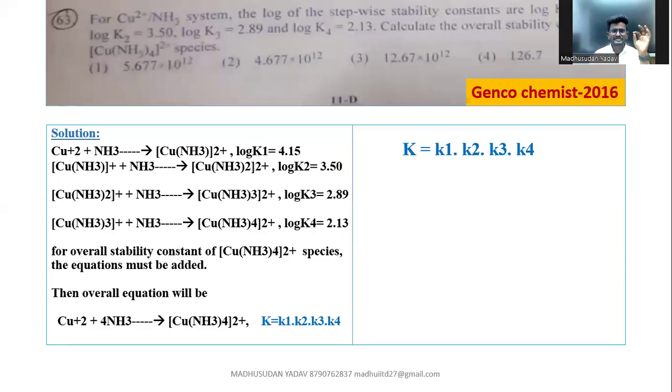Hi! Do you know how to solve this question which appeared in Genco Chemistry 2016? So look at the question. They have given rate constants of a copper +2 metal ion with the ammonia system.